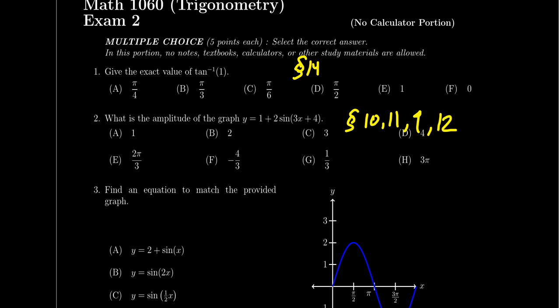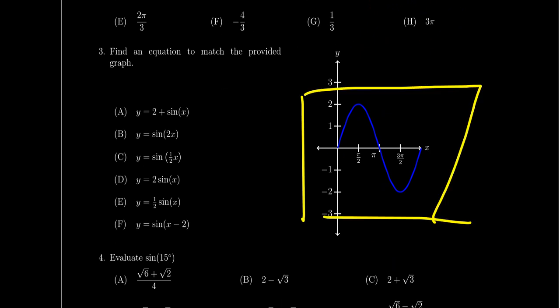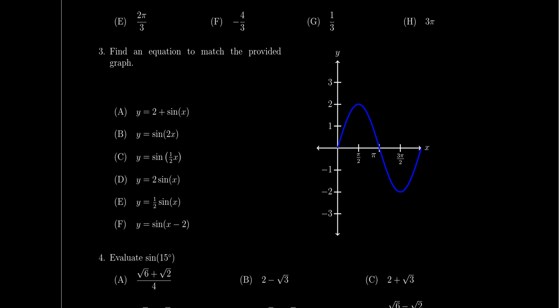Question 3 also involves graphing: you'll be given the graph of a trigonometric function and asked to identify which formula produces it. You can use process of elimination, or analyze the graph directly — look at amplitude, period, shifts, reflections, and whether it resembles sine, cosine, or tangent — then match it to the correct formula. Again, consult lectures 10 and 11 primarily, while also being familiar with lecture 9 for basic shapes and lecture 12 for tangent, secant, and similar graphs.